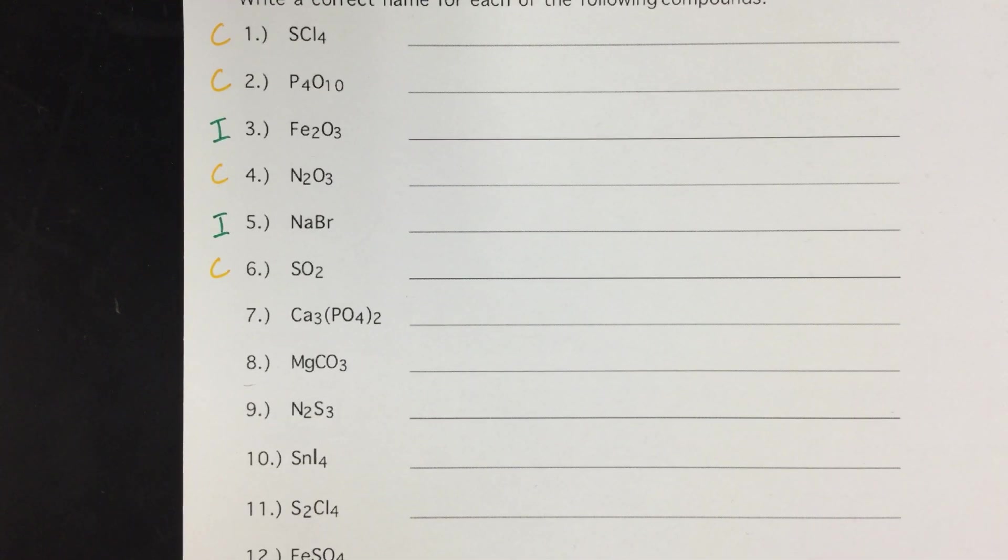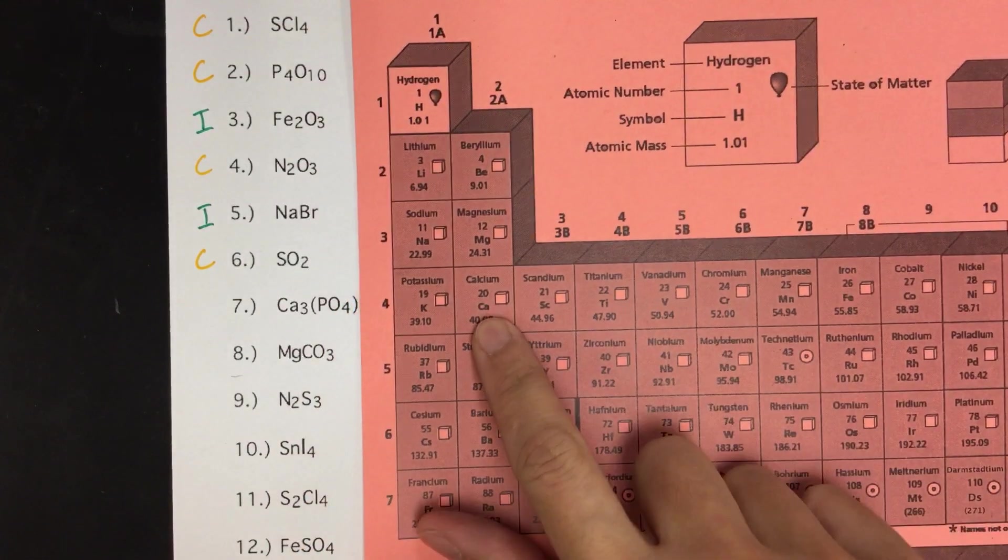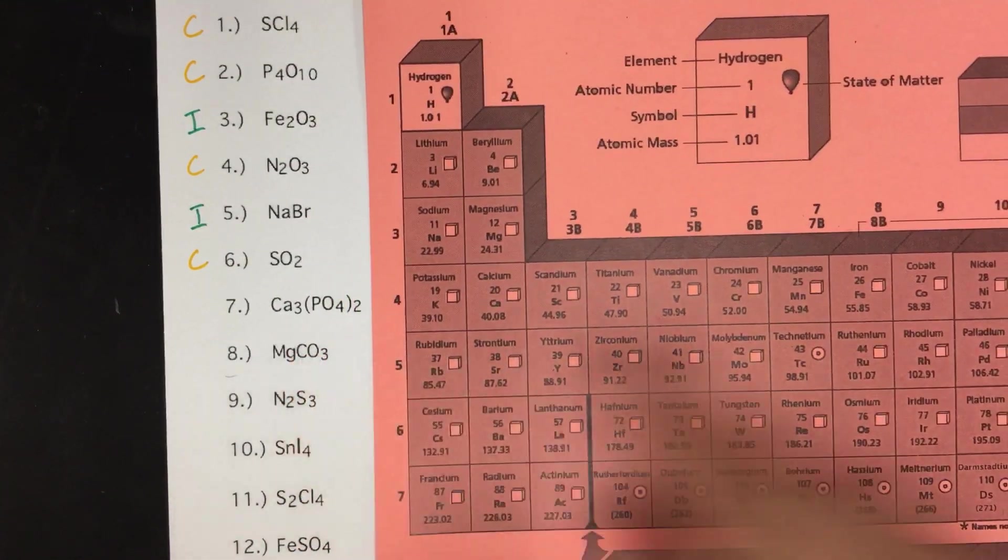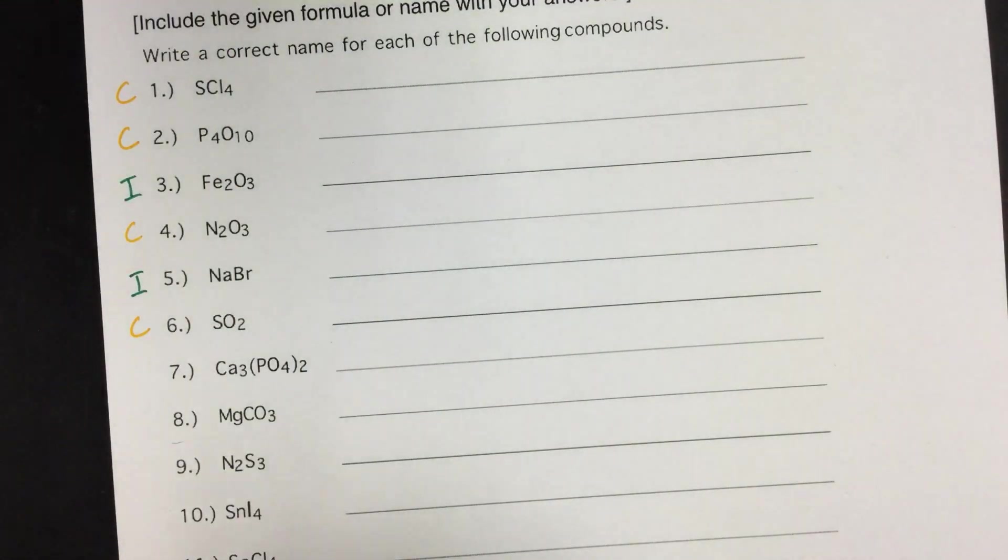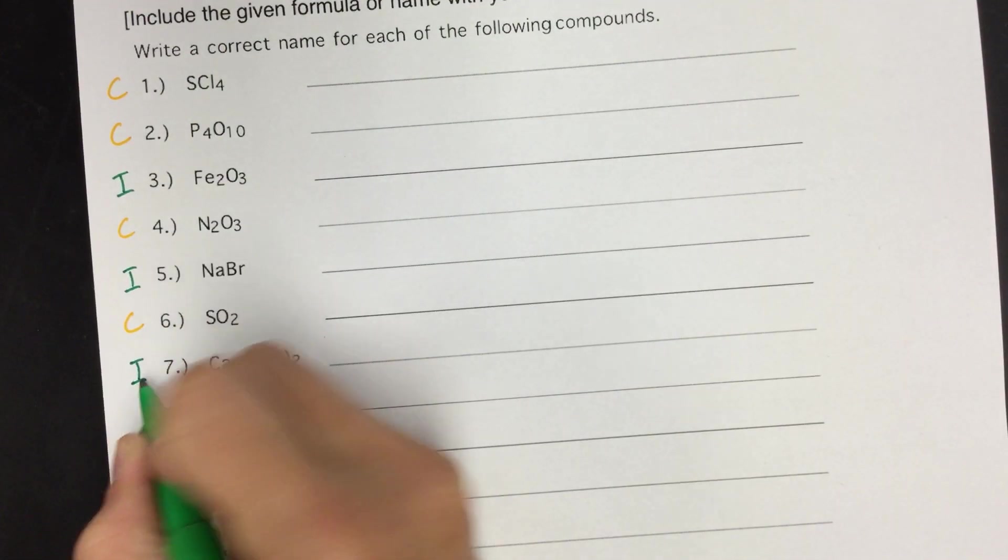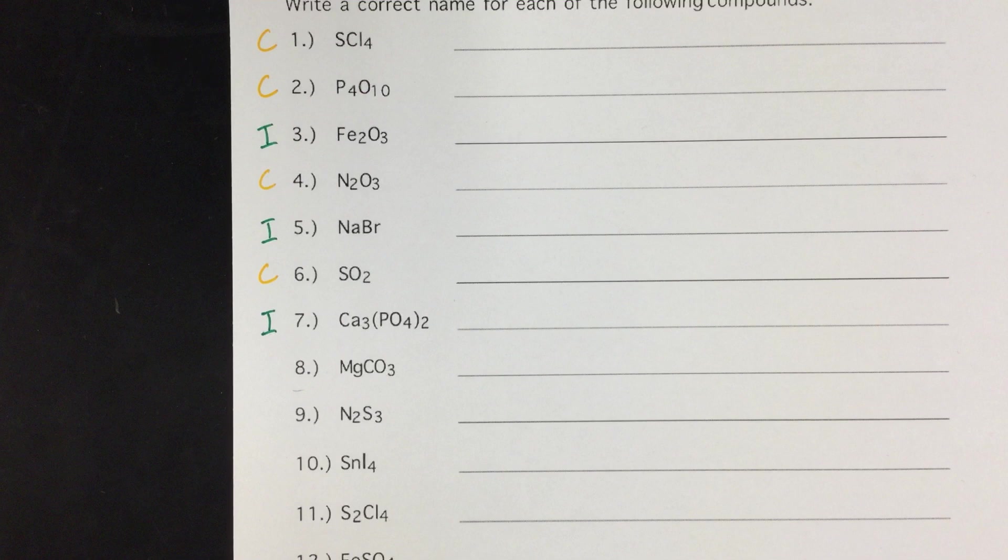Number seven looks a little crazy. It's calcium, which is a metal, and then here you have a polyatomic ion, phosphate. Remember, if it's on the ions list, it's definitely going to be ionic. Plus, since calcium's a metal, it will also be ionic.